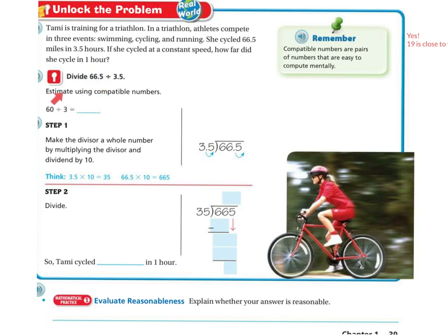First, we're going to estimate using compatible numbers. 66 is close to 60, and 3.5 is close to 3. 6 goes into 3 two times, and adding the 0, so it's going to be 20.